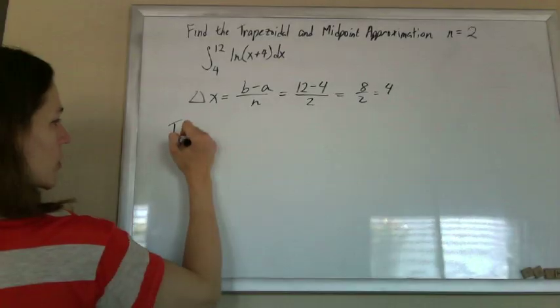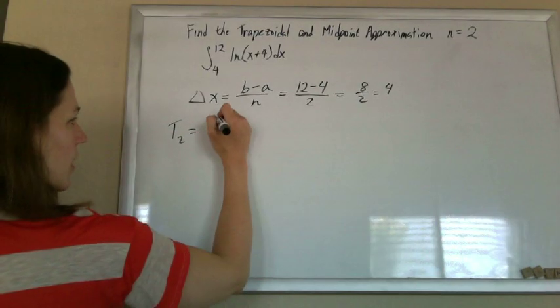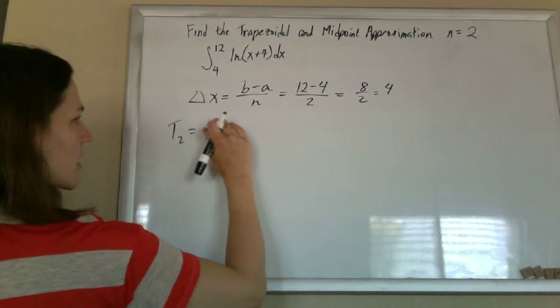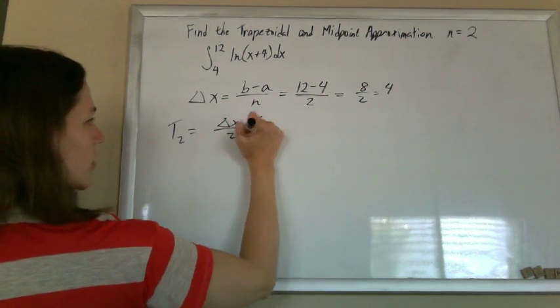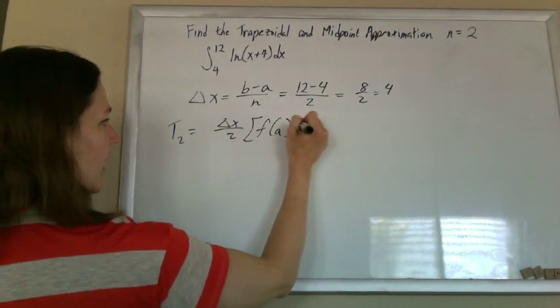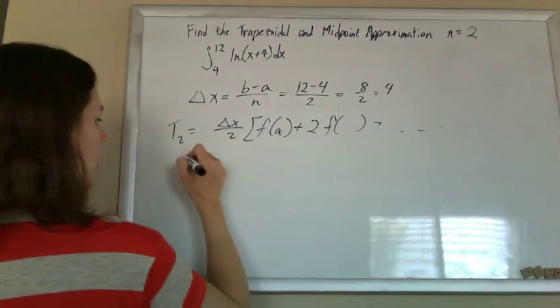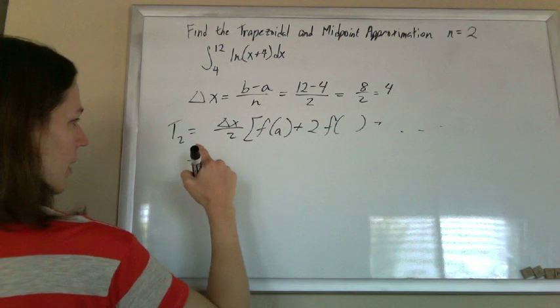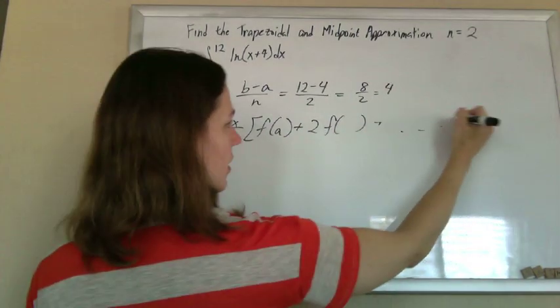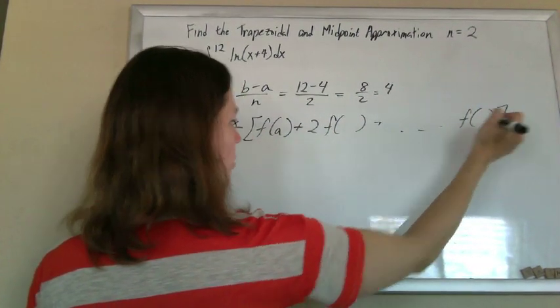For a trapezoidal, you always have delta x over 2, and you start at f of a, and it's 2 times the rest of them. So 2 is all in the middle until you get to the last one, which is just the normal one.